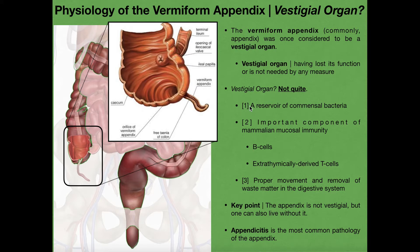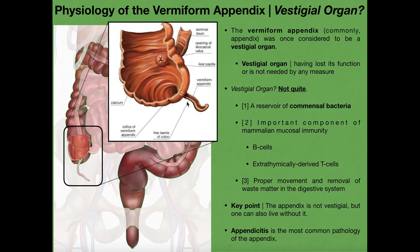One of the functions of the appendix is to serve as a reservoir of commensal bacteria. Commensal bacteria is a term from microbiology that implies healthy bacteria — commensal meaning they go along with the function of the host, so they're not pathogenic. One way they demonstrated this was after a person goes through a big round of antibiotics, which pretty much clears out the bacteria in the large intestine. The appendix can then shunt its store of commensal bacteria back into the large intestine to accelerate repopulation of the colon.